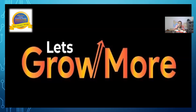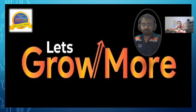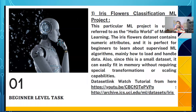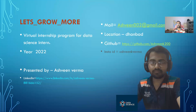This is the virtual internship program. This is the iris flower dataset — flower classification ML project. ML means machine learning. So it's a beginner task level and I have completed it. This is something about me, and it's the company Let's Grow More — a virtual internship program on data science intern.